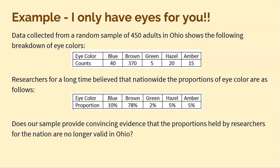Researchers for a long time believe that nationwide the proportions of eye color are as follows — these are what we believe to be true: 10% blue, 78% brown, 2% green, 5% hazel, and 5% amber. So here's the question: does our sample provide convincing evidence that the proportions held by researchers for the nation are no longer valid in Ohio?